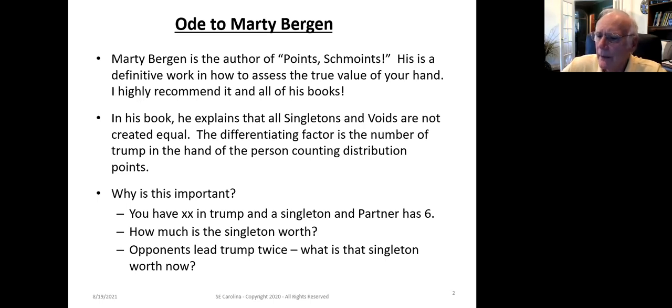In his book, he points out that all singletons and voids are not created equal. The differentiating factor is the number of trumps that you have in your hand if you're the person counting distribution. And why is this important?